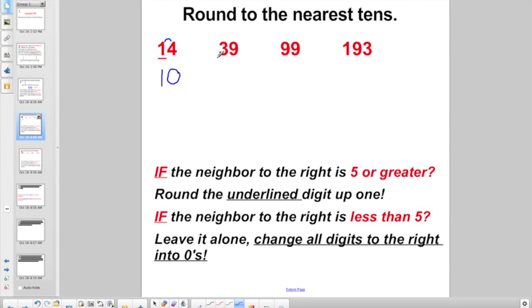Let's try another one here. 3 is the digit in the 10 spot. Look to the neighbor to the right. Hey, that is more than 5. So I can round this 3 up to a 4. And everything to the right of the underlined number is a 0. 39 is closest to 40.